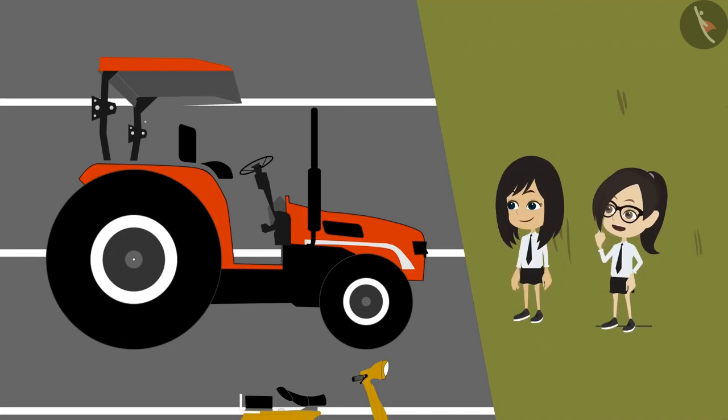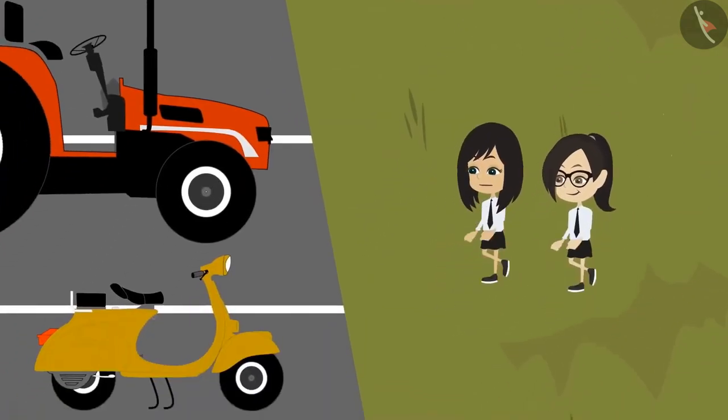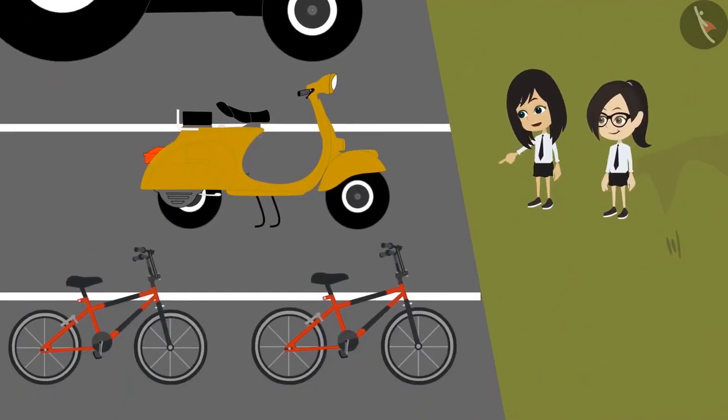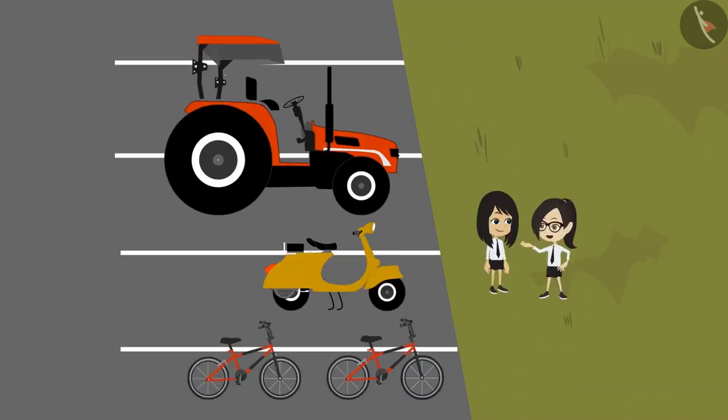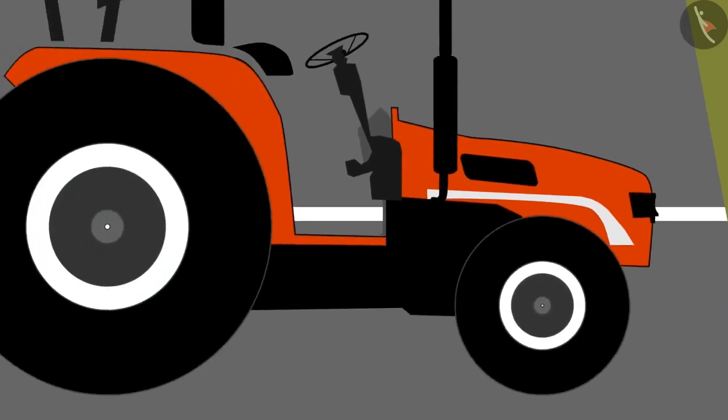Yes, they are very big. Compared to them, the tyres of our bicycles look so small. And look at the tyres of the scooter. They are smaller than that of our bicycle. Yes, but the tractor also has two types of tyres and the front tyre is smaller than the tyre at the rear.